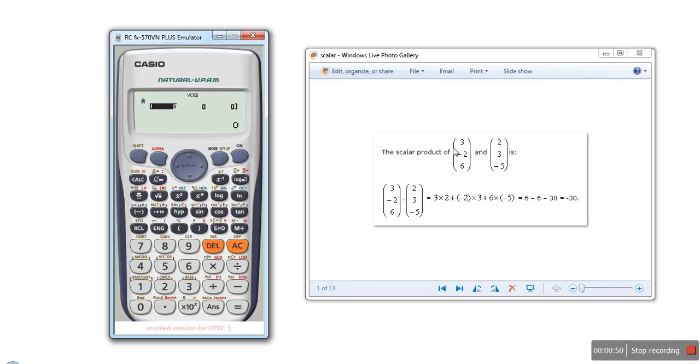Here we will enter our first vector. It is 3 equal sign minus 2 equal sign and 6. This vector is done. Press AC button. It will save the vector.